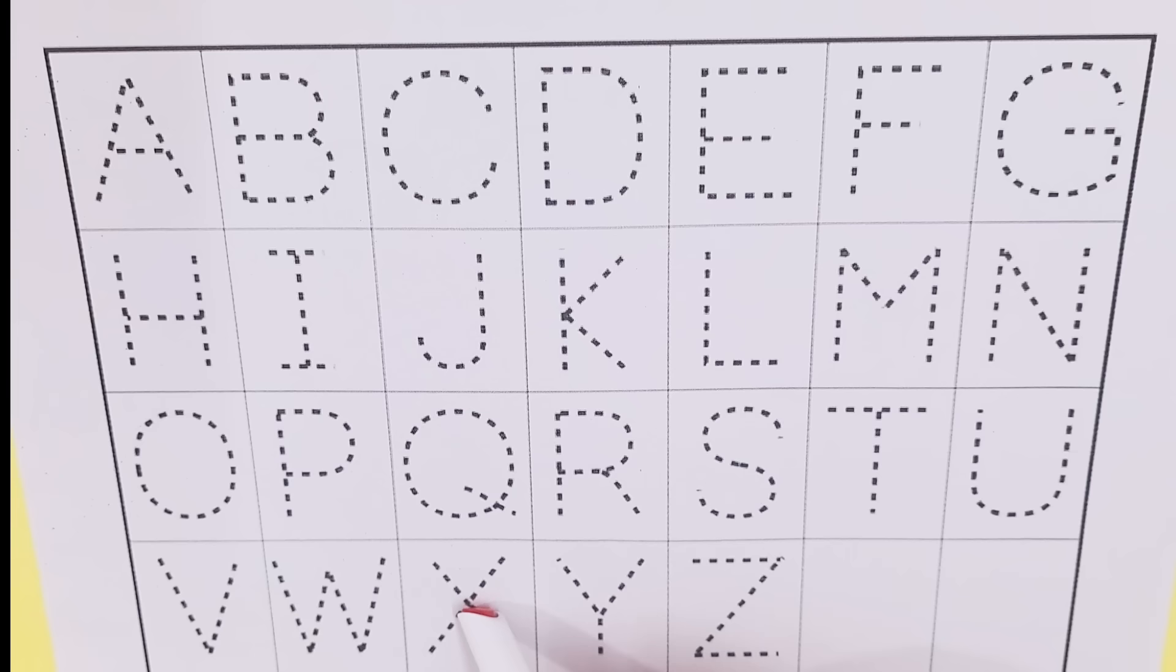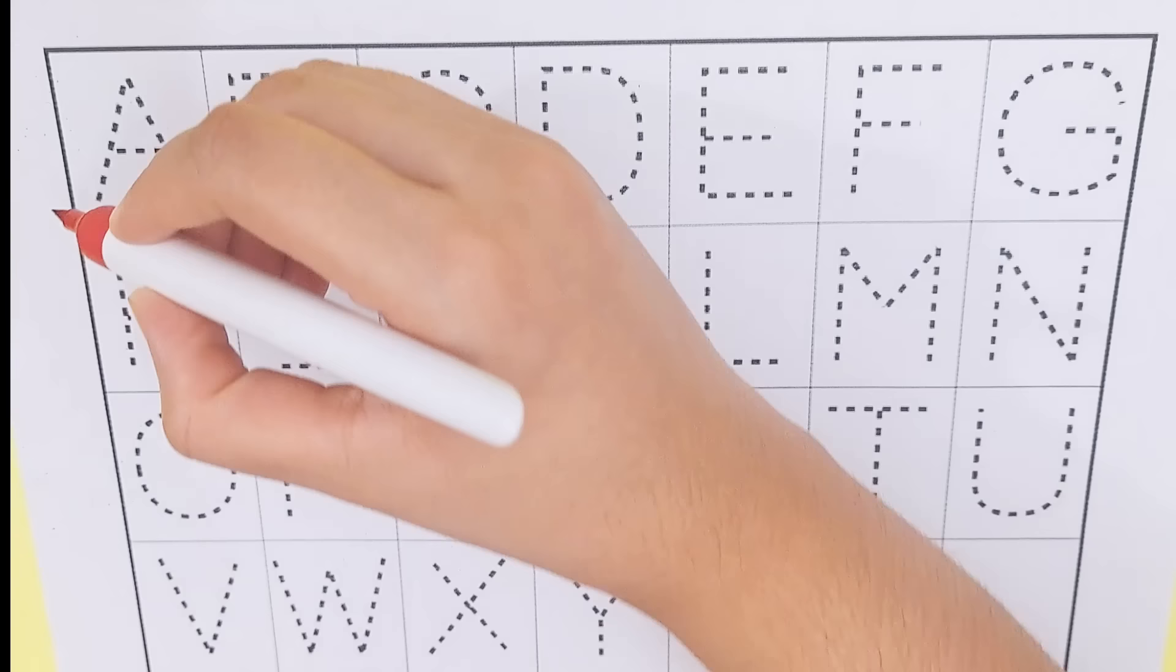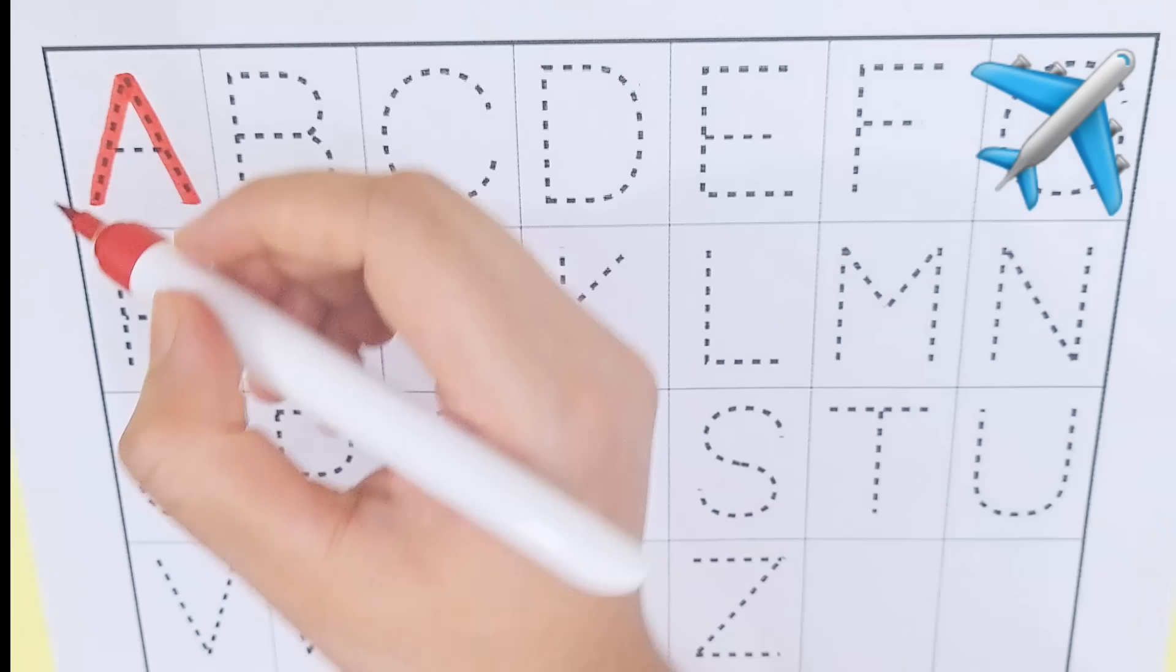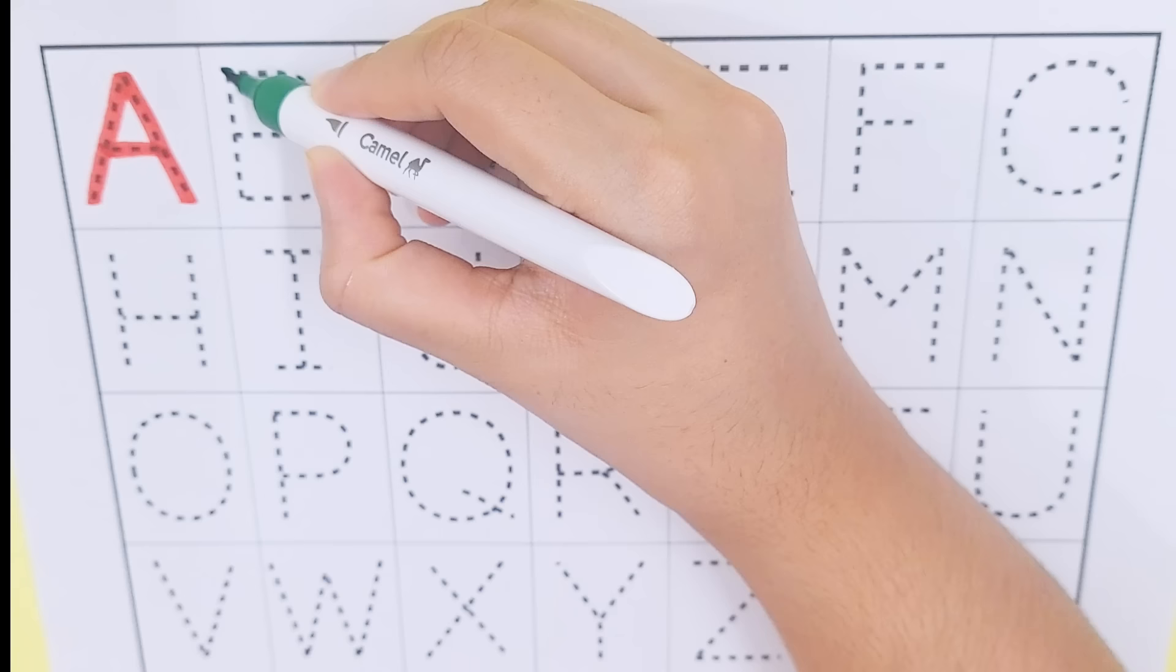X, Y, and Z. Red color, A, A for airplane. Dark green color, B, B for blueberry.